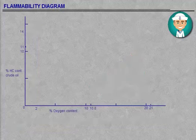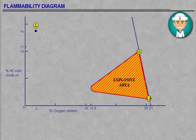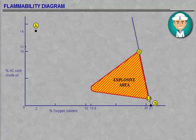To avoid the flammable area, a line is drawn up from point B, keeping well clear of the flammable area.